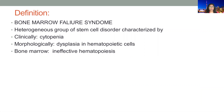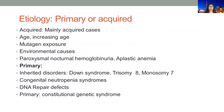MDS is a bone marrow failure syndrome — specifically a heterogeneous group of stem cell disorders characterized clinically by different types of cytopenias. Morphologically, there are dysplastic changes in the hematopoietic cells, and depending upon the lineages involved, there can be single lineage dysplasia or multiple lineages involved. In the bone marrow we see ineffective hematopoiesis.